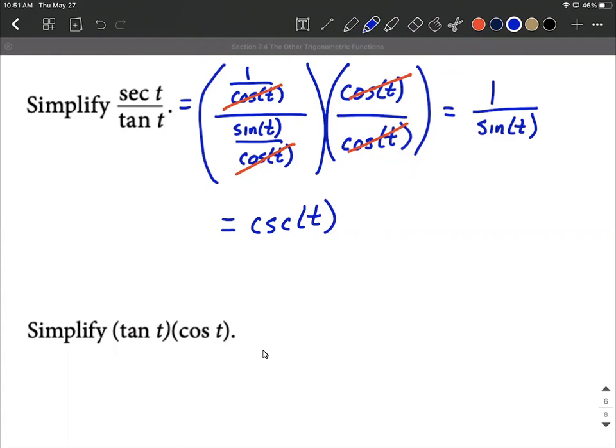On the next one we have tangent of t multiplied by cosine of t. I'm going to replace the tangent in terms of sine and cosine. The tangent is equal to sine of t over cosine of t, and that's still multiplied by, bringing along that cosine of t.